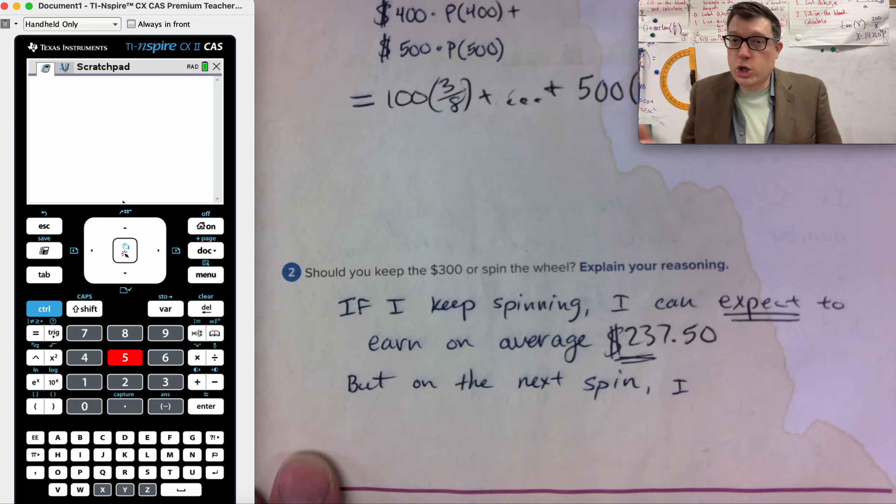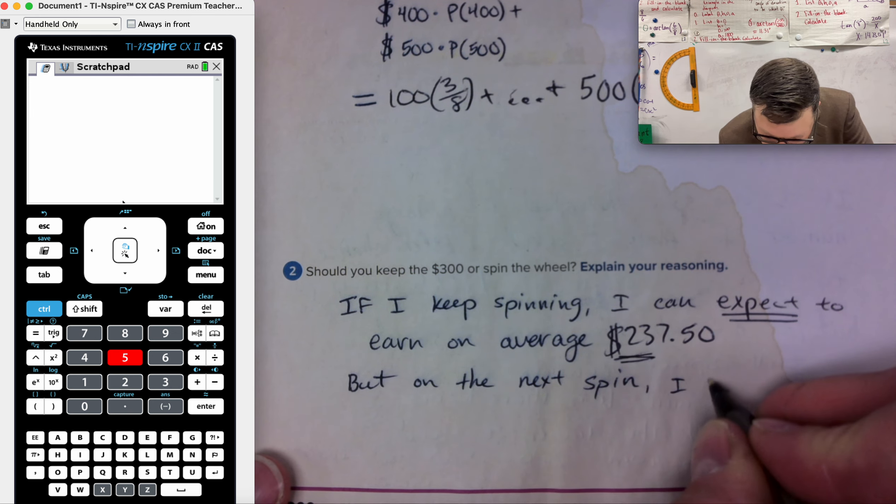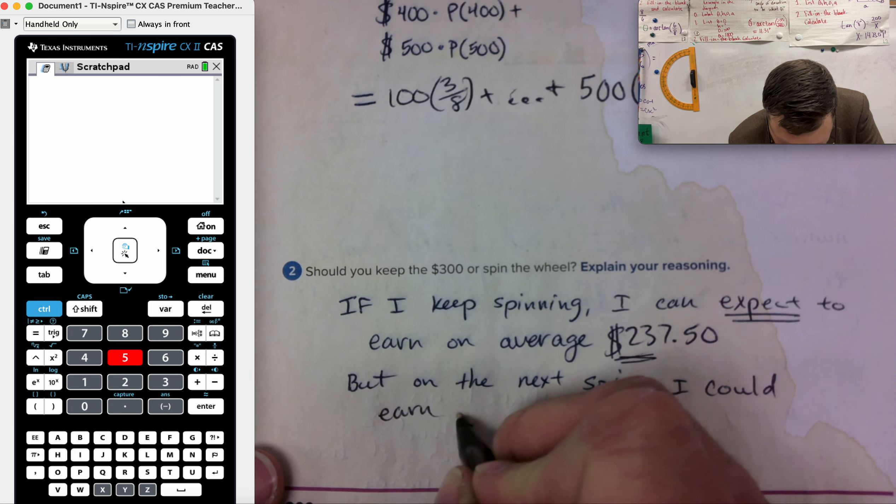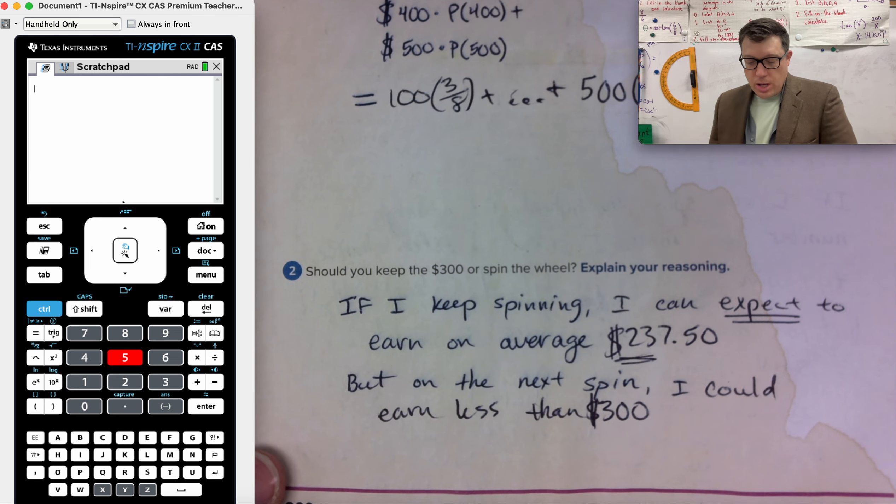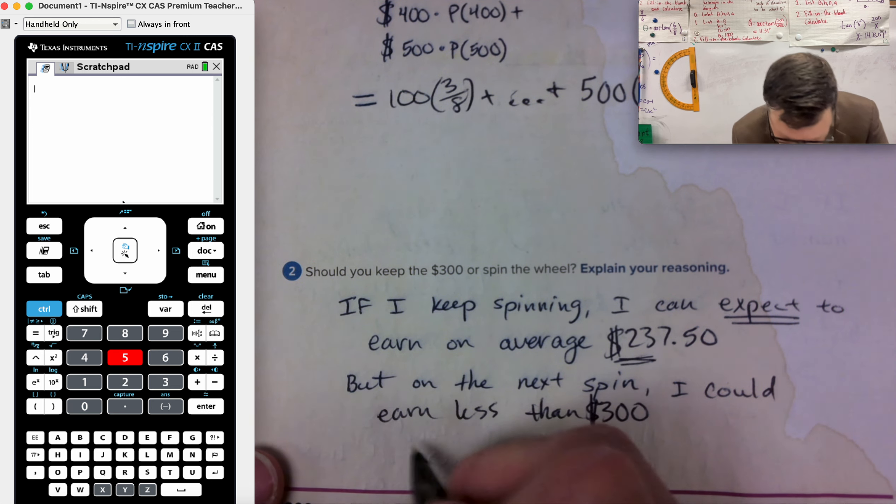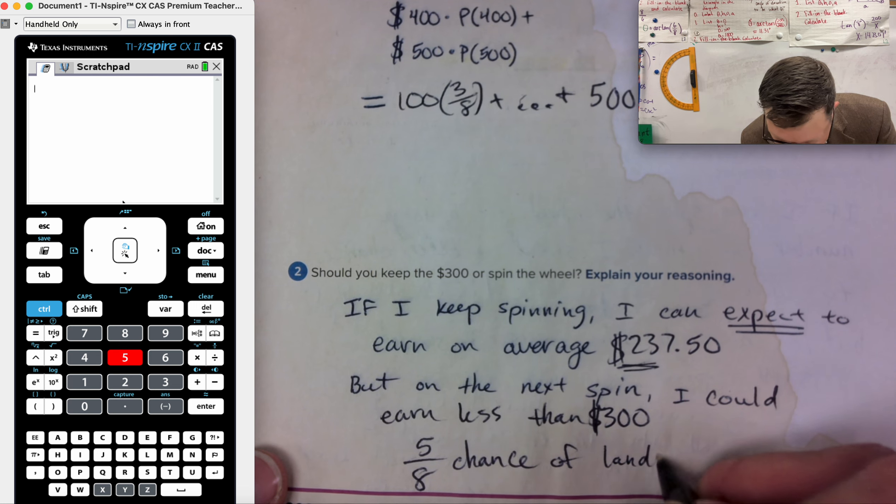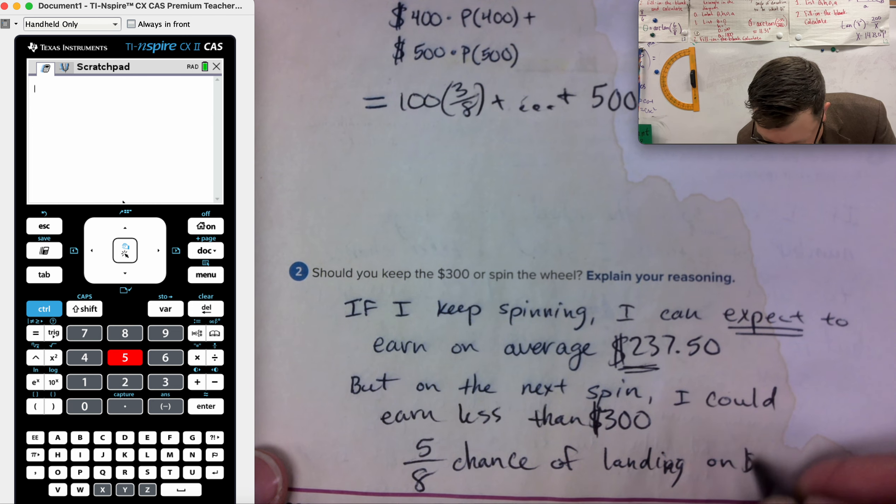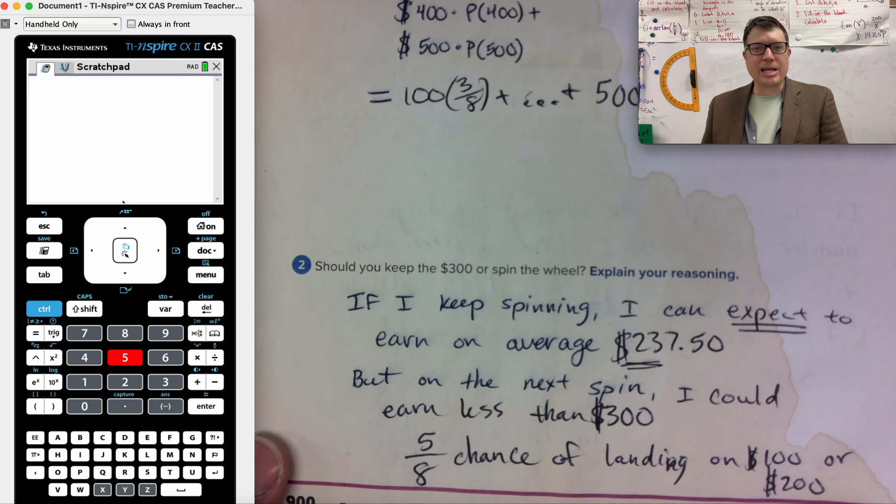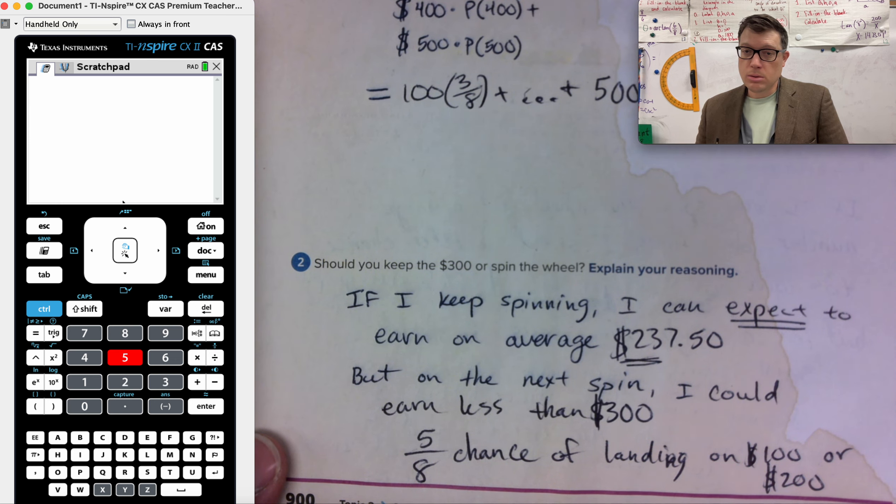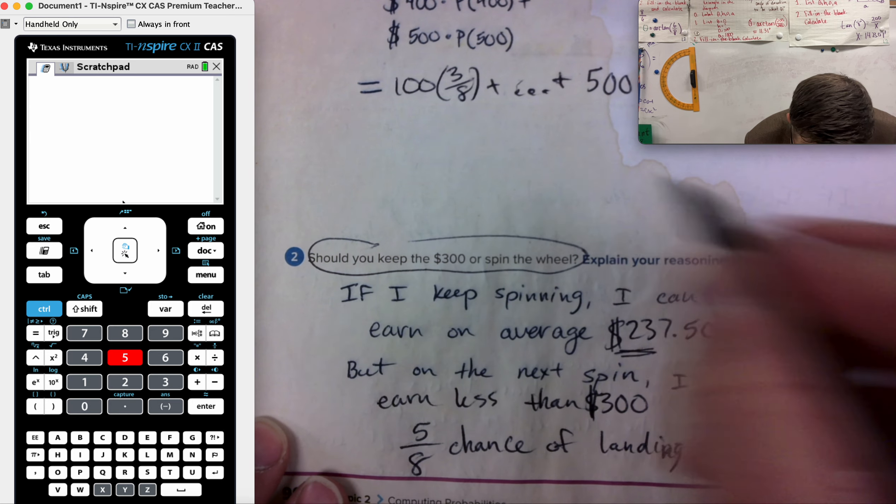But on the next spin, I could win or lose more or less than 300. I could earn less than 300. Specifically, there is a five out of eight chance, five out of eight chance or probability of landing on $100 or $200. So I'm really not likely going to keep my money, even though, you know what? Yeah. If I keep spinning, I'm not spinning. No. Should you keep or spend? I'm keeping.